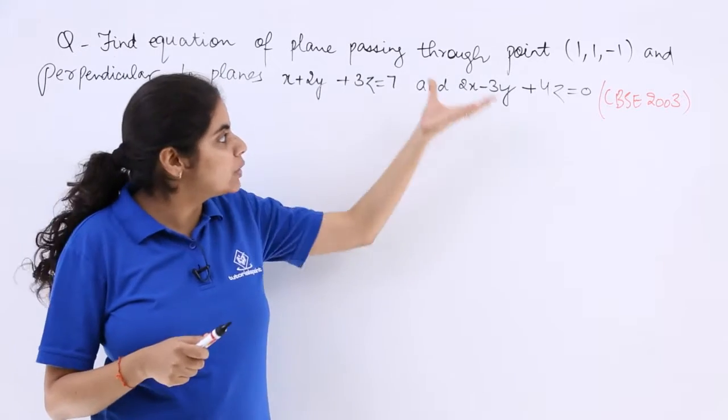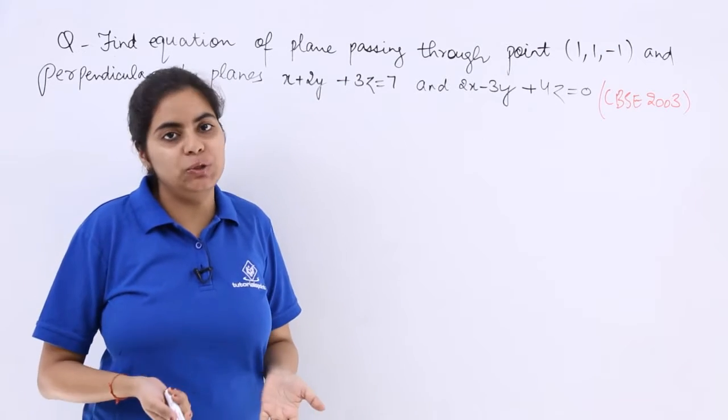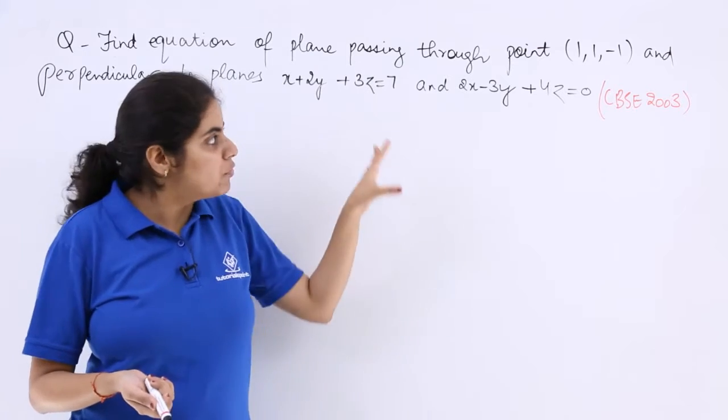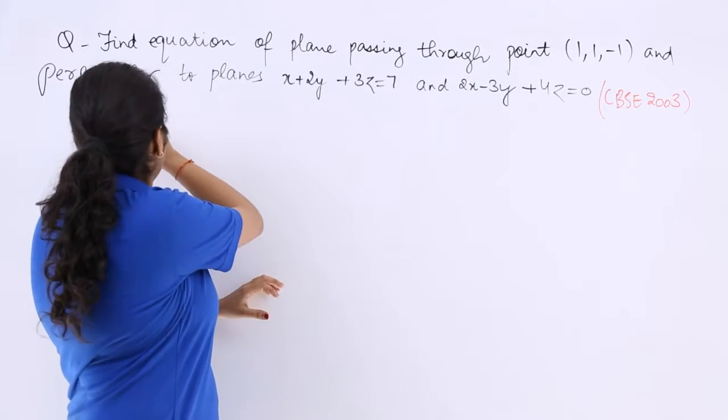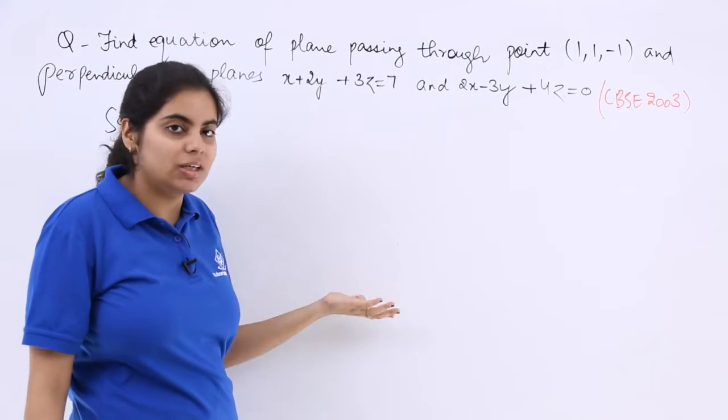You have to decide whether to carry on with this Cartesian form method or convert to vector form. For this question, I am going with the vector form. It is up to you completely; both forms will give the answer if solved correctly.